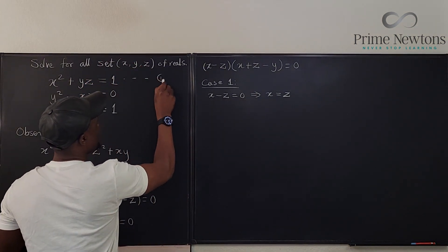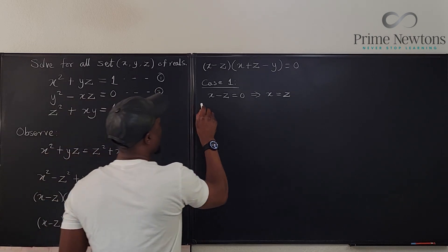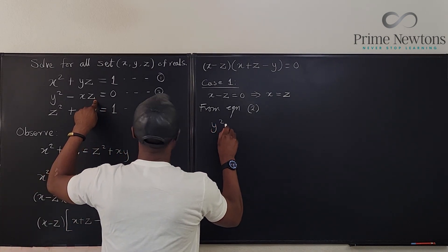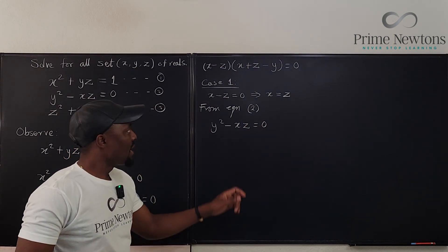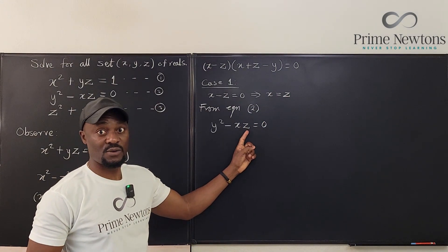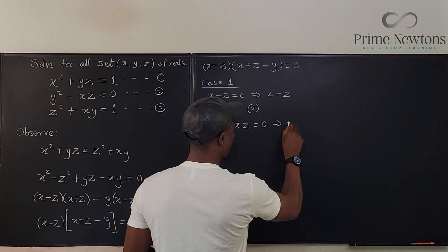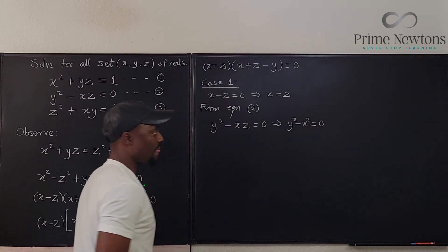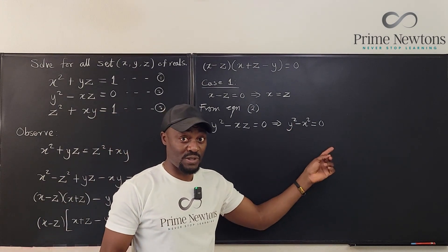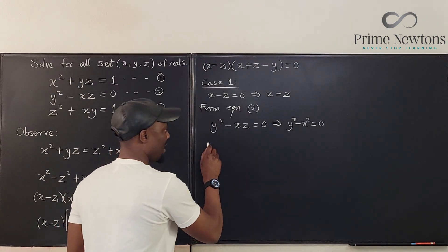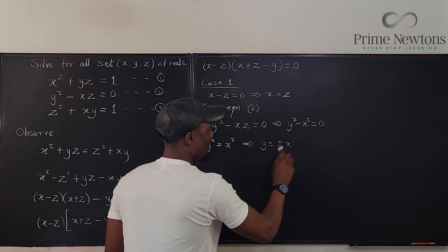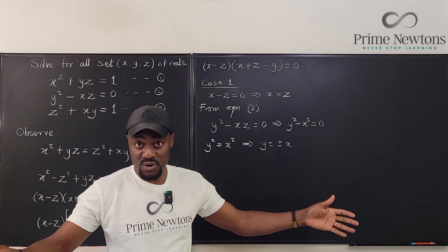From equation 2, we know y squared minus xz equals 0. If x equals z, we can write this as y squared minus x squared equals 0, since xz becomes x times x. This means y squared equals x squared, which implies y equals plus or minus x.